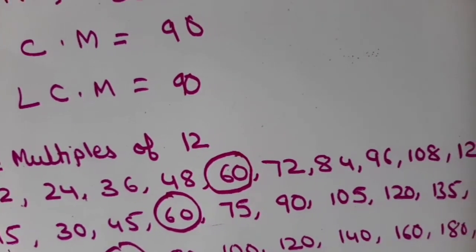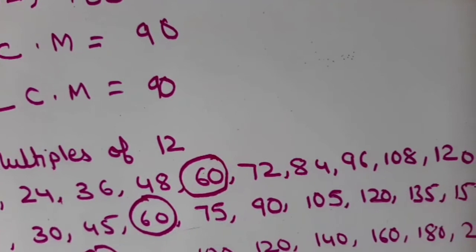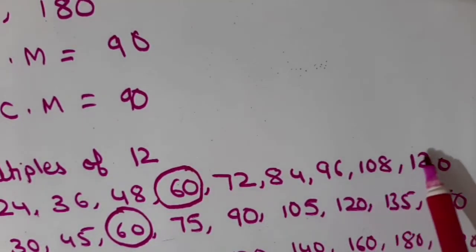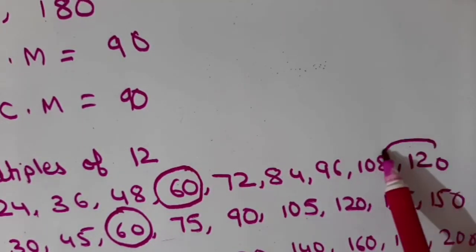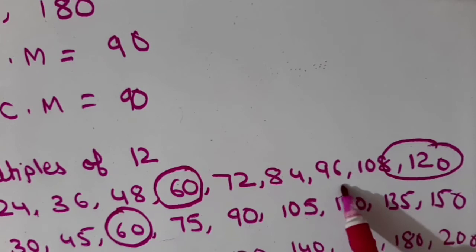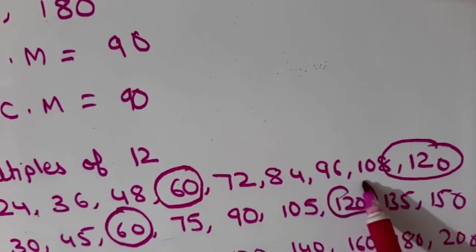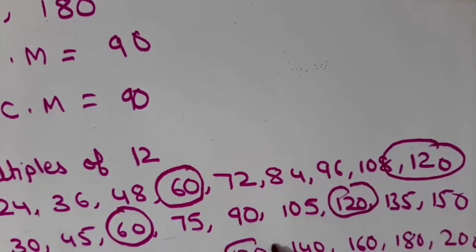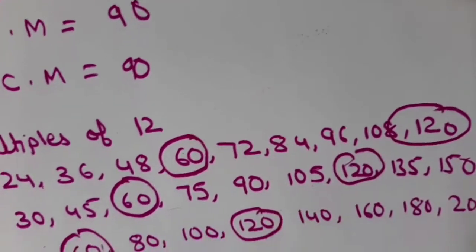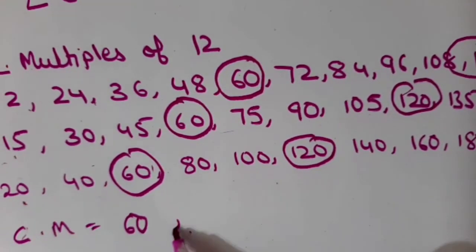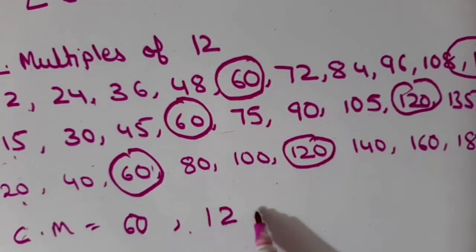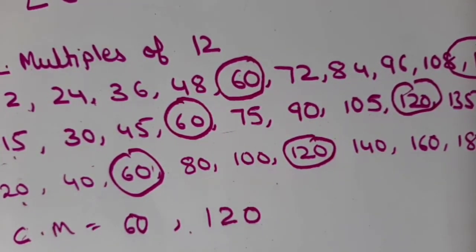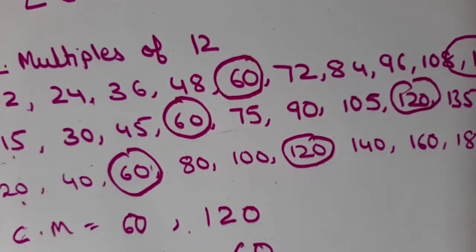Now the second common multiple — yes, I can see 120. See, 120 is also there in all three. So the second common multiple is 120. Therefore, LCM will be the least amongst these two, that is 60. So LCM is 60.